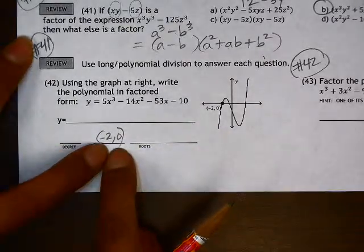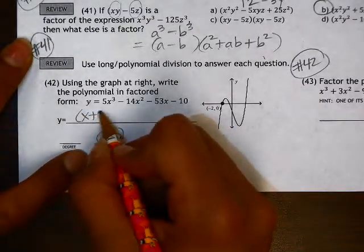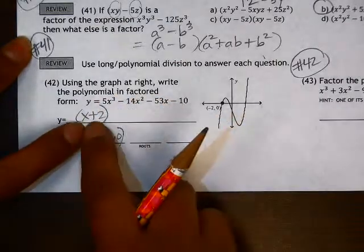If one of the roots is at negative 2, 0, that means one of the factors has to be x plus 2. So if I can divide this polynomial by x plus 2,